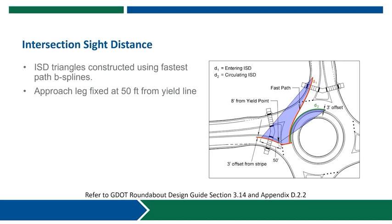Upstream of our entry we create a construction line that is three feet offset from our lane line stripe. Our first distance starts at a point 50 feet from the yield line and three feet off of the lane line, and we compute our first leg to the end of our D1 to create our intersection sight distance triangle. For D2 we assume that the vehicle has proceeded forward and is actually sitting at the yield line, at which point we come back eight feet from the yield line to reflect the position of the driver sitting behind the steering wheel.